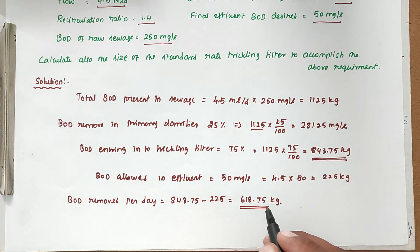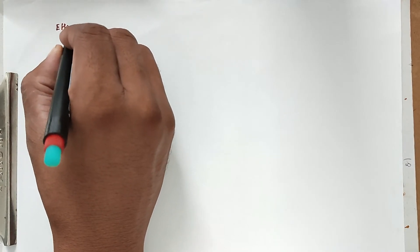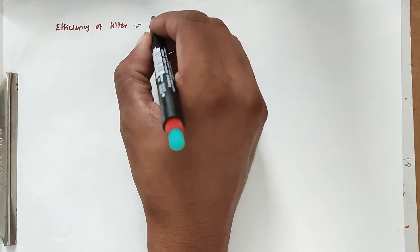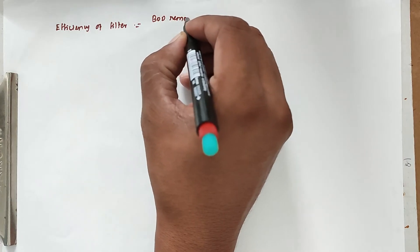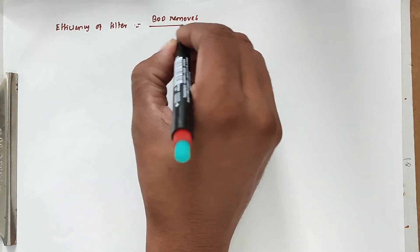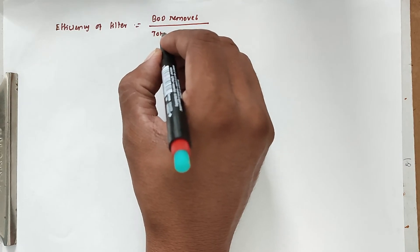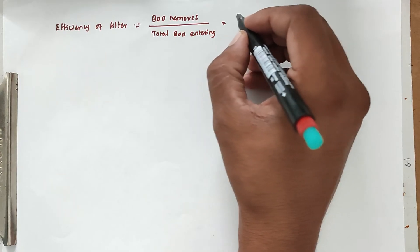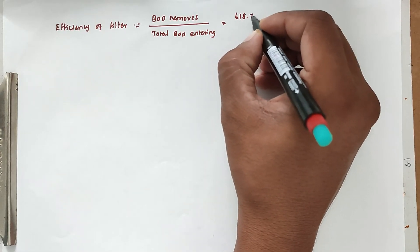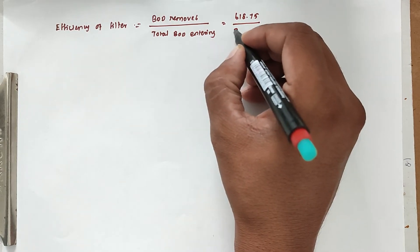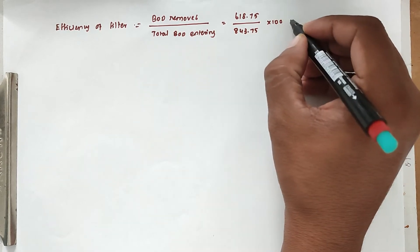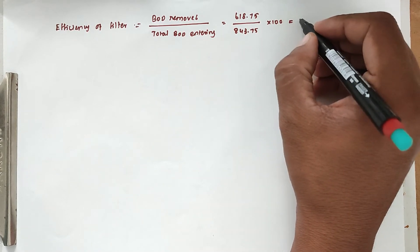Now we find the efficiency of the filter. Efficiency equals BOD removed divided by total BOD entering. BOD removed is 618.75 and BOD entering is 843.75, so expressed as a percentage the efficiency equals 73.3%.